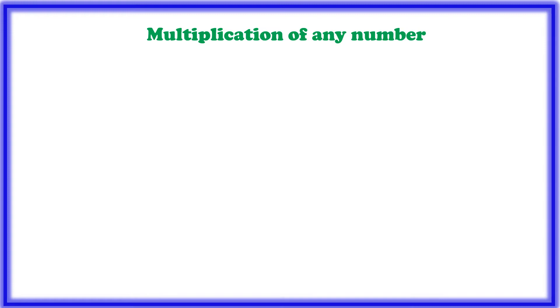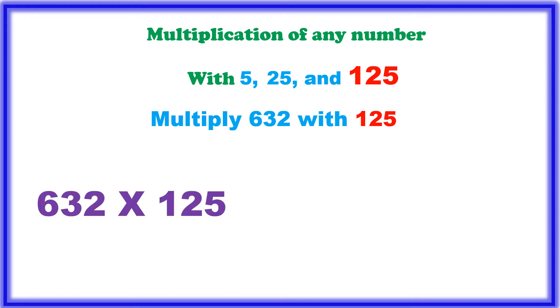Multiplication of any number with 125, we will try with 125, multiply 632 with 125. 125 is nothing but 5 into 5 into 5, if you multiply 3 5s, you will get 125. Then 1 5 is equal to 10 by 2, in a similar way, 3 5s is equal to 10 by 2 into 10 by 2 into 10 by 2, if you multiply, you will get 1000 by 8.